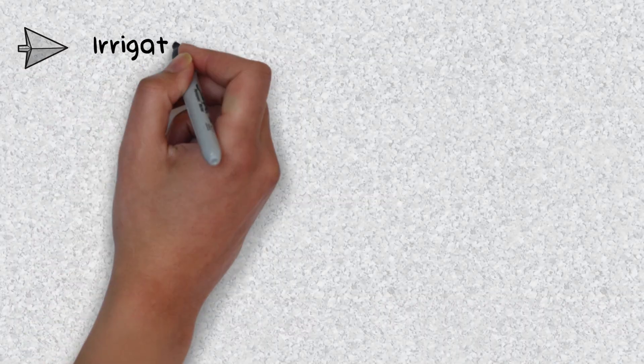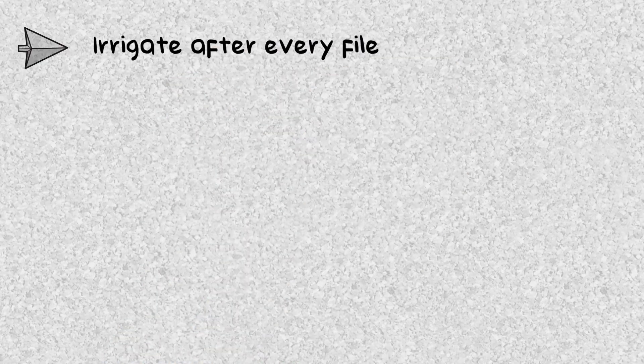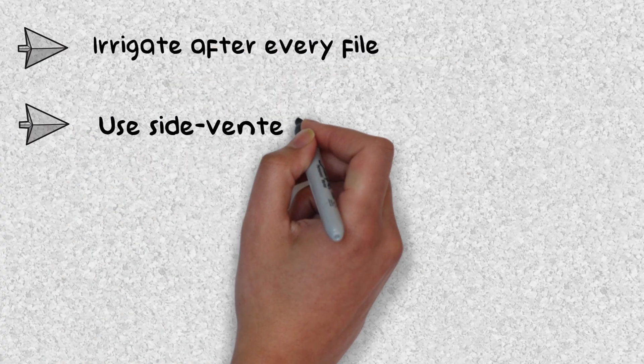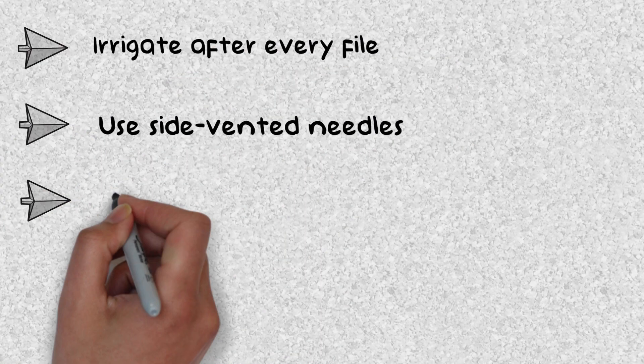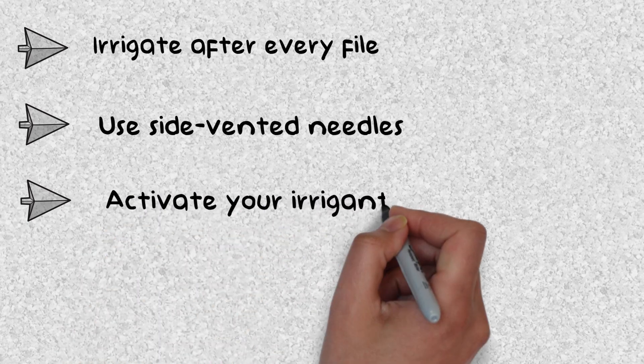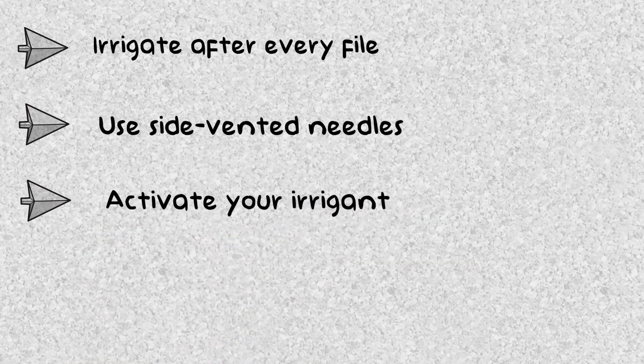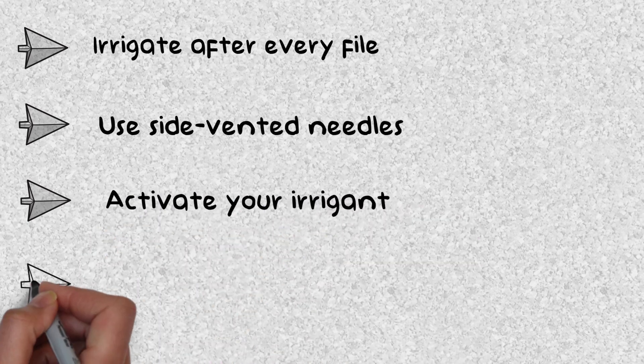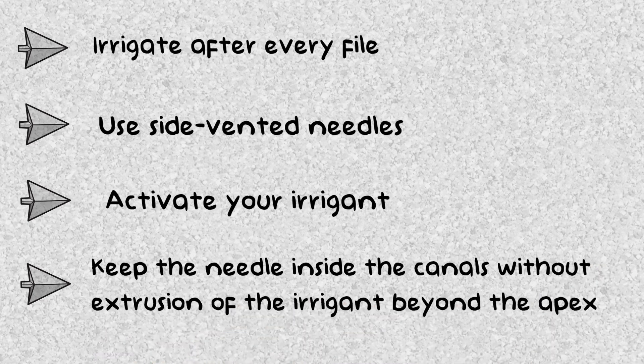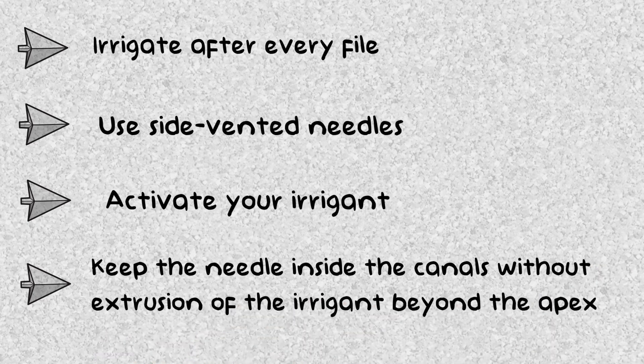The best practices for irrigation are: irrigate after every file to flush out any extra debris; use side-vented needles to reduce extrusion risks; activate your irrigant either ultrasonically or with a manual agitation method; and keep the needle inside the canals without binding and without extrusion of the irrigant beyond the apex. Remember, proper irrigation and cleaning are the true factors in determining the success of your root canal treatment.